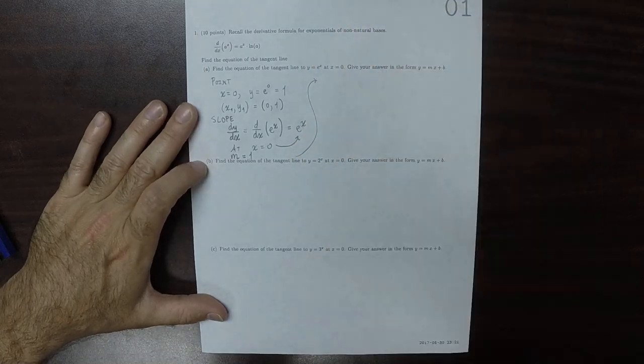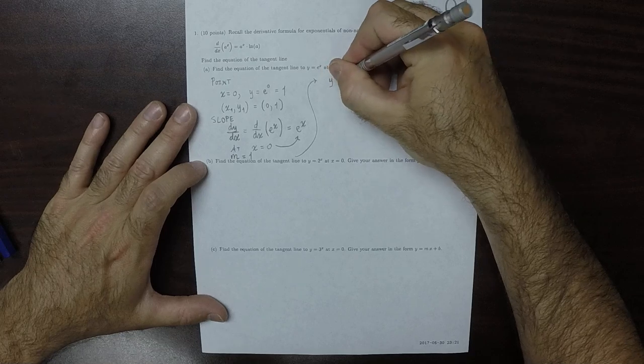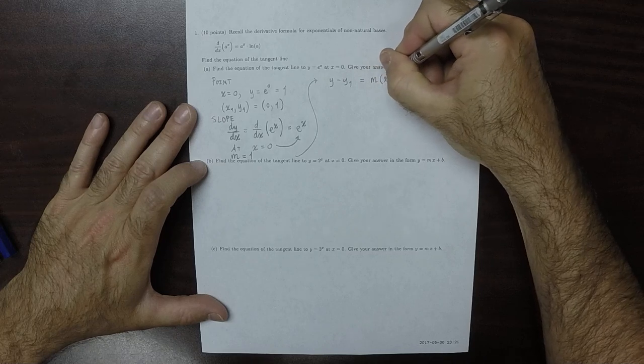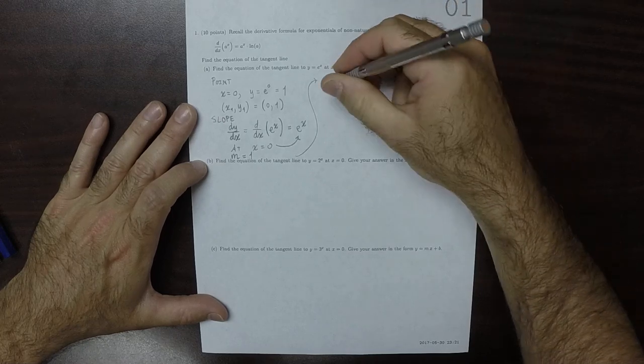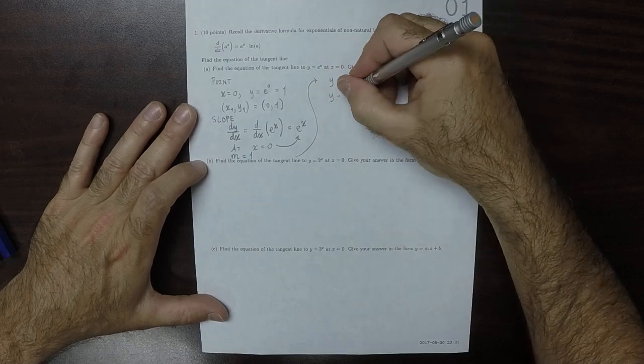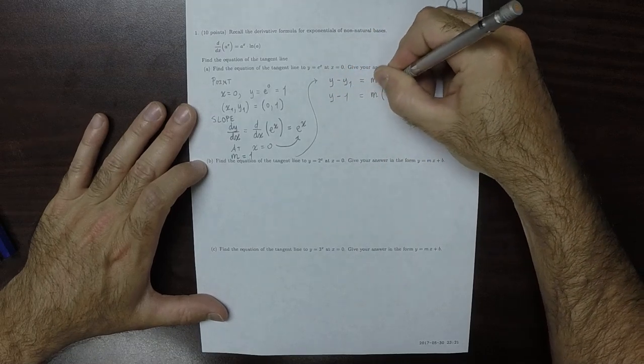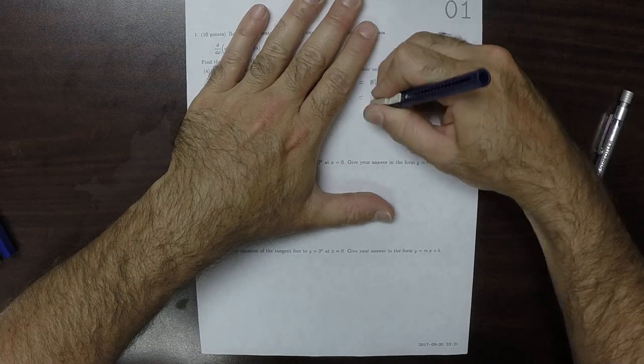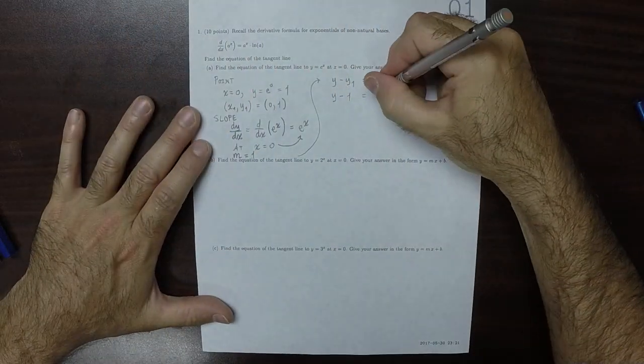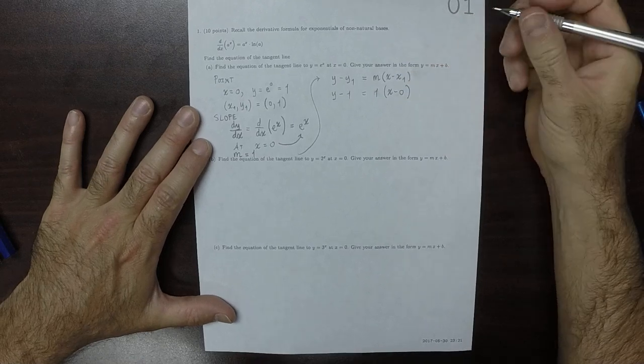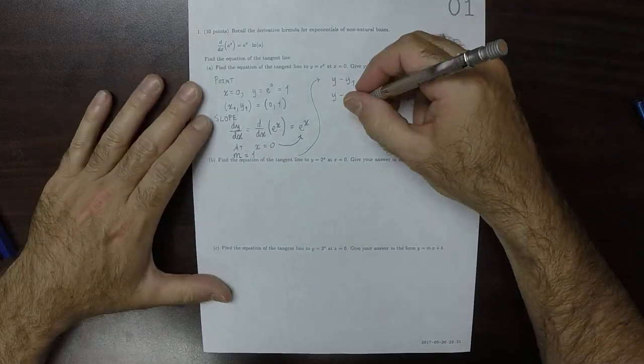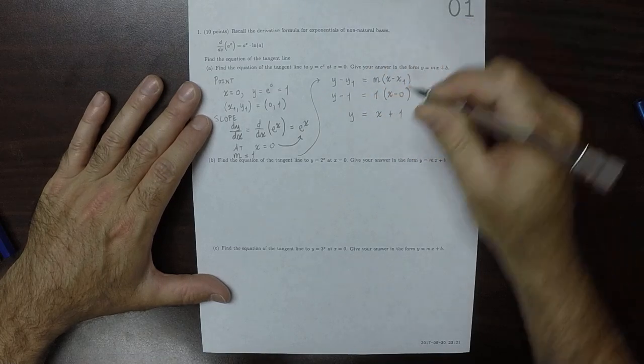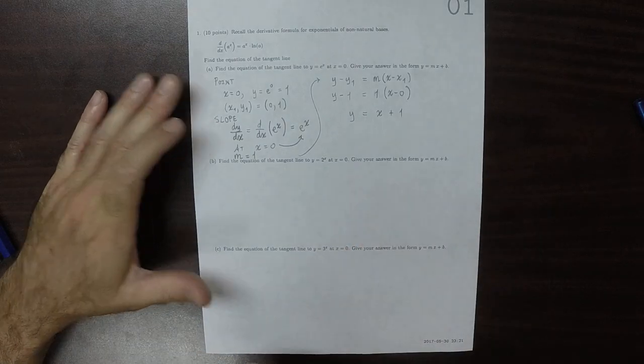Then we can plug this into the point slope form of a line. y minus y1 is m multiplied by x minus x1. So y minus 1 is m multiplied by x minus 0. That should say 1, because m is 1, times x minus 0. And then solving, that is, y is equal to x plus 1. Moving the 1 to the other side. So that's the answer to part a.